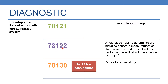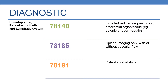The next is 78122, which deals with whole body volume determination, including separate measurement of plasma volume and red cell volume, radiopharmaceutical volume dilution technique. The next code is 78130, which deals with red cell survival study. The code 78135 has been deleted. The next code is 78140, which deals with labeled red cell sequestration, differential organ or tissue.